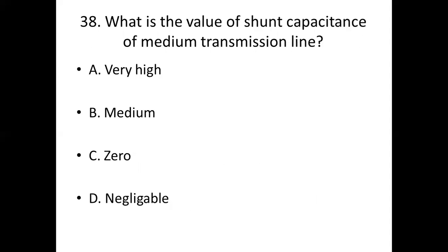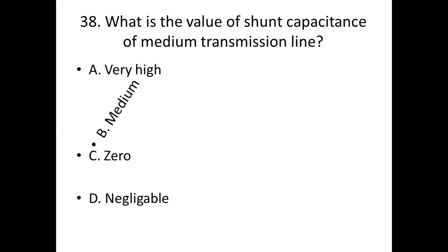Thirty-eighth bit. What is the value of shunt capacitance of a medium transmission line? Option A: very high. Option B: medium. Option C: zero. Option D: negligible. Answer: Option B, medium.